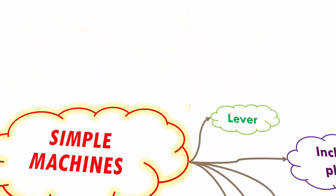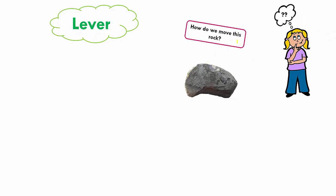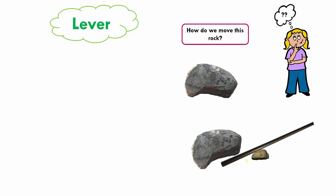Let's look at a lever. Say we have a rock and we have to move it — it's quite difficult to carry it aside. But if we find a stone nearby and a rod, and put the rod under the boulder, it will be easier to move it. The center position is called the fulcrum, which is fixed. We have the load — the heavy boulder — and we have the effort. If we push the rod downwards, the load moves upwards.